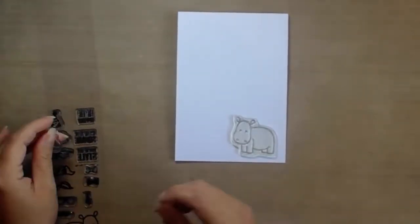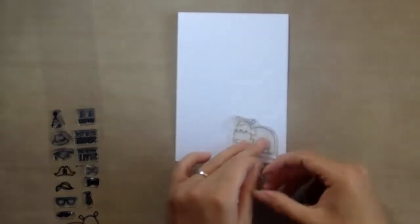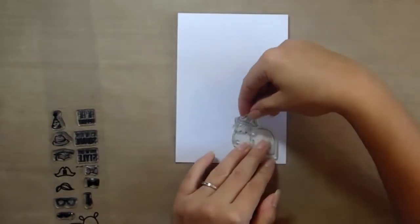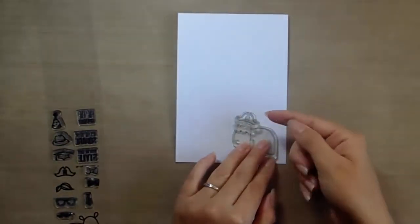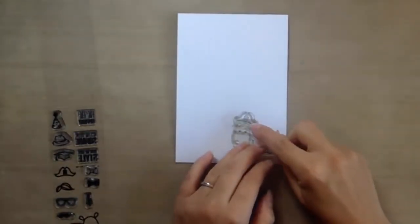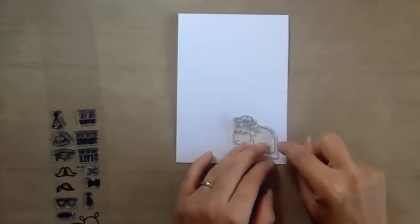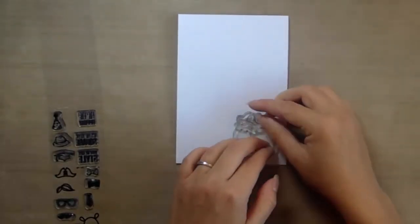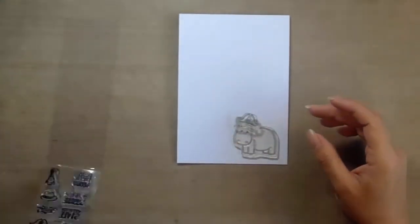You can add more than one accessory to the same area as in the hair and the hat. But as the hat is on top, when you place them down you would need to stamp the hat first, then the hair and then the hippo. So I will show you how to do this.